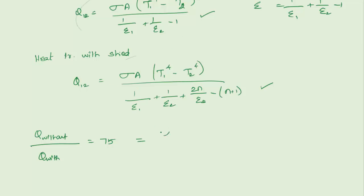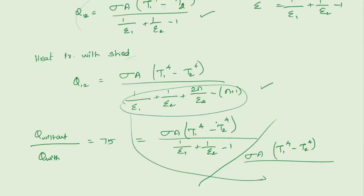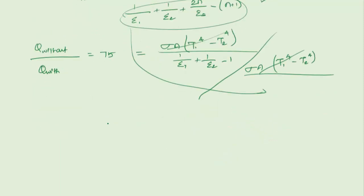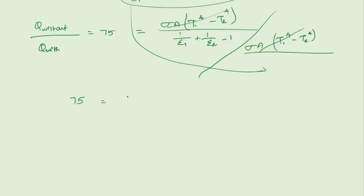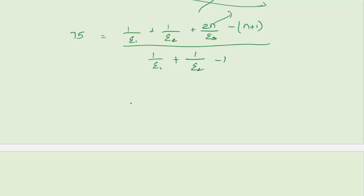Substituting both formulas into the ratio q_without / q_with = 75, the sigma, area, and temperature terms cancel. The resulting equation is: 75 = (1/epsilon_1 + 1/epsilon_2 + 2n/epsilon_s − n + 1) / (1/epsilon_1 + 1/epsilon_2 − 1). Substituting epsilon_1 = epsilon_2 = 0.6 and epsilon_s = 0.04 and solving for n gives n = 4 shields. Thank you all — in the next video we will solve more problems on radiation shields.